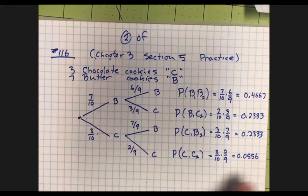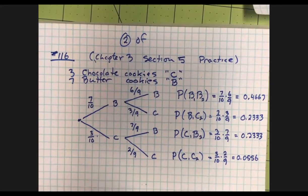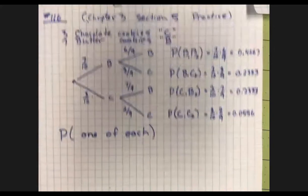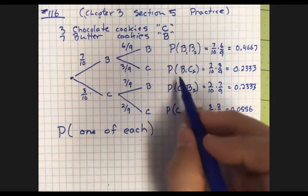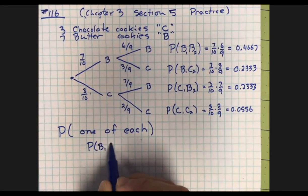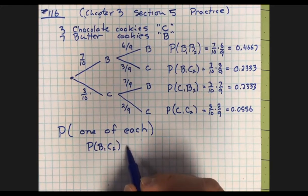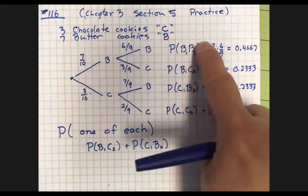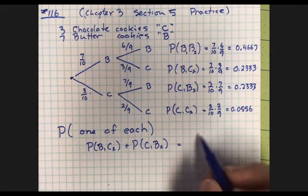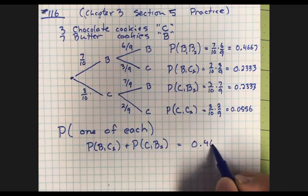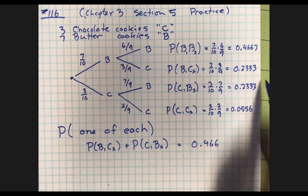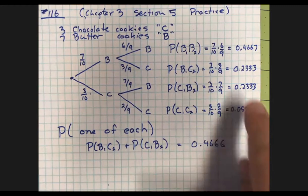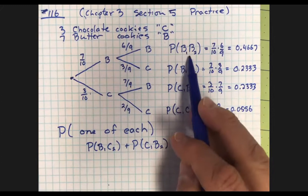The probability of butter then butter: 7/10 times 6/9 equals 0.4667. Butter then chocolate: 7/10 times 3/9 equals 0.2333. Chocolate then butter: 3/10 times 7/9 equals 0.2333 — notice that's the same. Chocolate then chocolate: 3/10 times 2/9 equals 0.0556 — less than 6% chance of getting two chocolate cookies because there weren't many in the box.